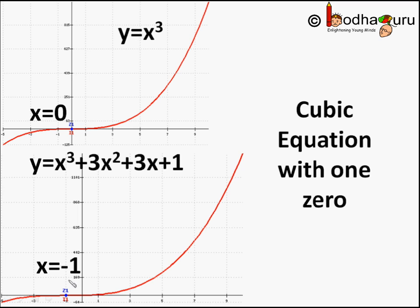But, you will never find a cubic polynomial which has more than three zeros. So, we can say cubic polynomials will have less than or equal to three zeros.